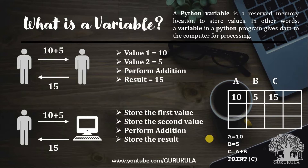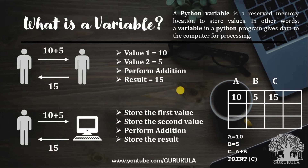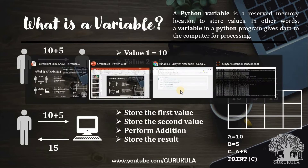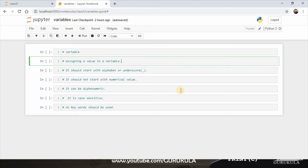We will store the c value — that value is the output. So this is the system; we will get 15 as output. Now let's open Jupyter notebook and see what variables are, and how to assign a value to a variable.